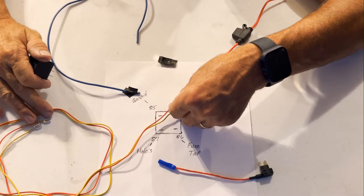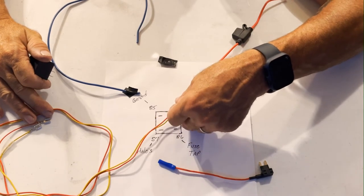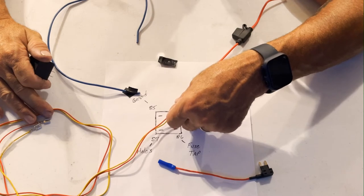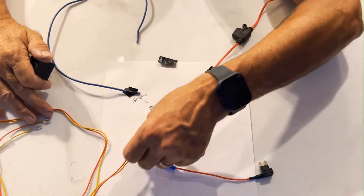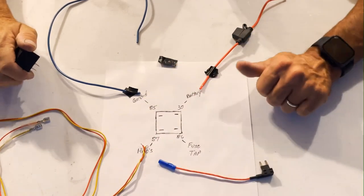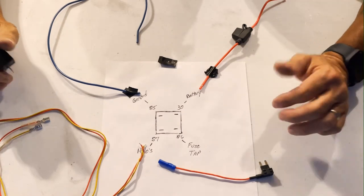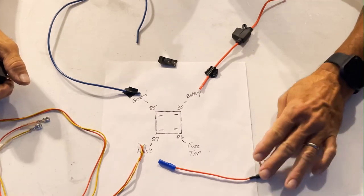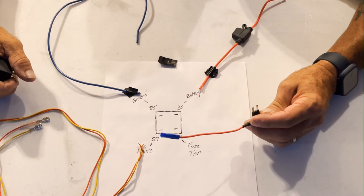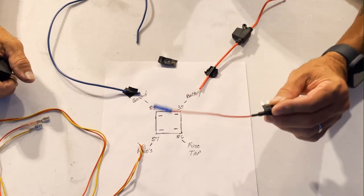And then when you turn the key off to switch, the relay will go ahead and open or close, whatever. And then boom, that 12 volts is removed and you don't have anything going to your halos and your circuitry on your fuse tap is safe. So that's the proper way to do it.